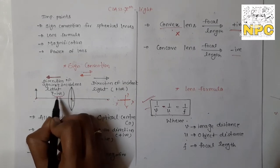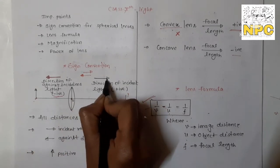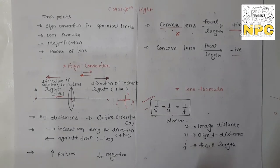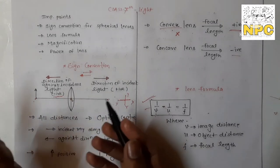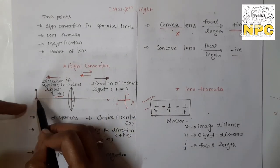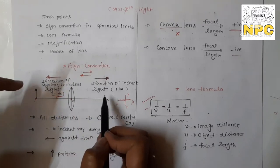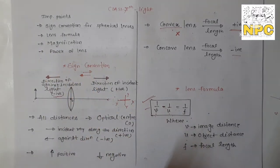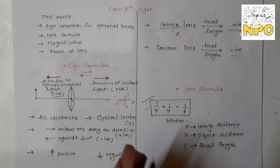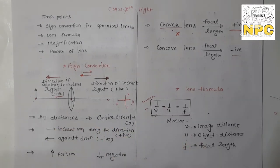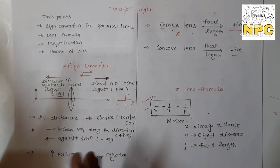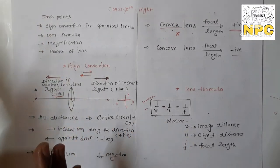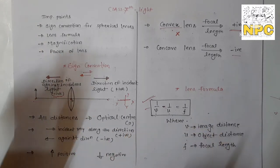The next point: distances measured upward, or perpendicular to the x-axis, are taken as positive. And distances measured in the downward direction are taken as negative. These are the similar points from the mirror's sign convention. But now we will explain one different point.